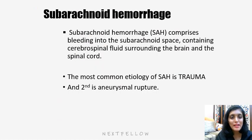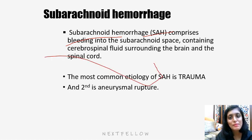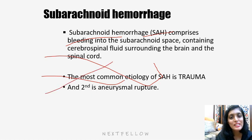Subarachnoid hemorrhage comprises bleeding into the subarachnoid space containing CSF surrounding the brain and spinal cord. The most common etiology is trauma, and the second is berry aneurysmal rupture.